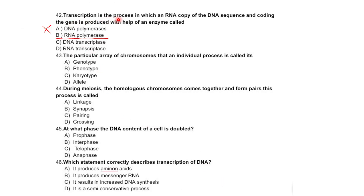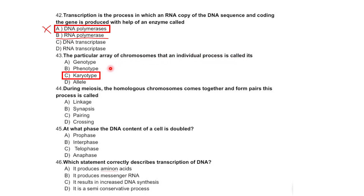Transcription is the process in which an RNA copy of the DNA sequence encoding the gene is produced with the help of the enzyme RNA polymerase. The particular array of chromosomes that an individual possesses is called its karyotype. During meiosis, homologous chromosomes come together and form pairs — this process is called synapsis.